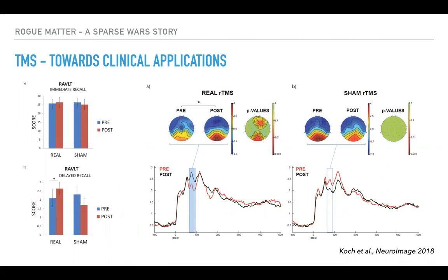Q: How do you make sham TMS? A: Basically, you simulate the click of the stimulation but the coil is not emitting anything. So if someone has already experienced TMS, they will notice. It has to be a naive subject. I'll share an anecdote: the first time I went through a TMS experience, I didn't know if it was sham or real stimulation. Afterward I told the researcher it wasn't that bad, and she told me, well, actually that was the sham session. I could feel it — it's quite noticeable.